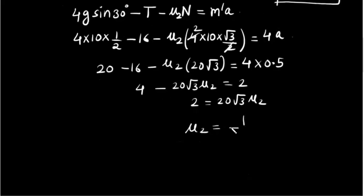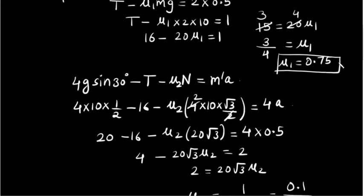So mu2 will become 1 upon 10 root 3, that is 0.1 divided by root 3. So what will this become? 0.1 divided by root 3 will be approximately 0.06. So this is the answer: mu2 is 0.06 and mu1 is 0.75.